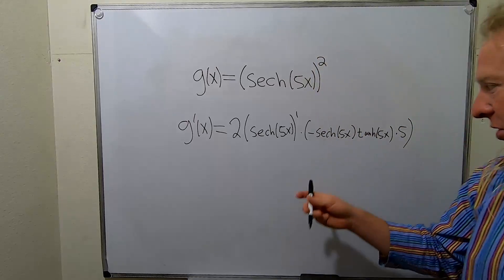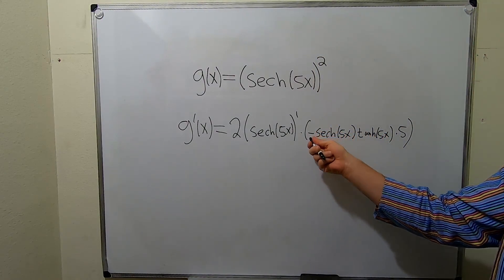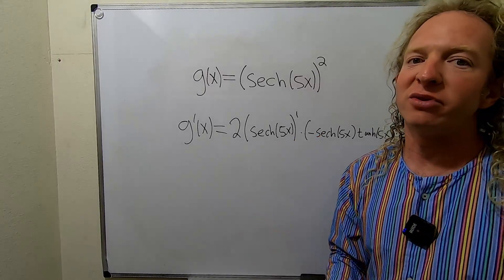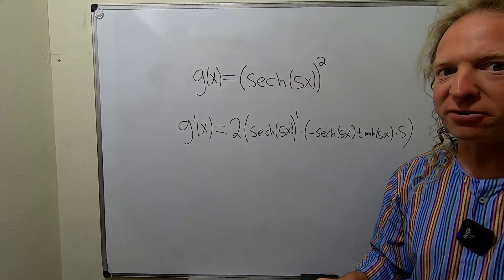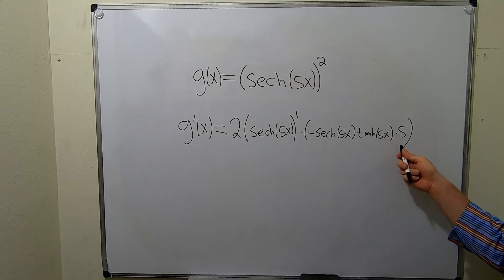But here's the hyperbolic secant. So it's hyperbolic secant, hyperbolic tangent, plus you have the negative sign whenever you're dealing with the hyperbolics. It's a little bit different than the regular secant. Times, chain rule again, derivative of 5x is 5.